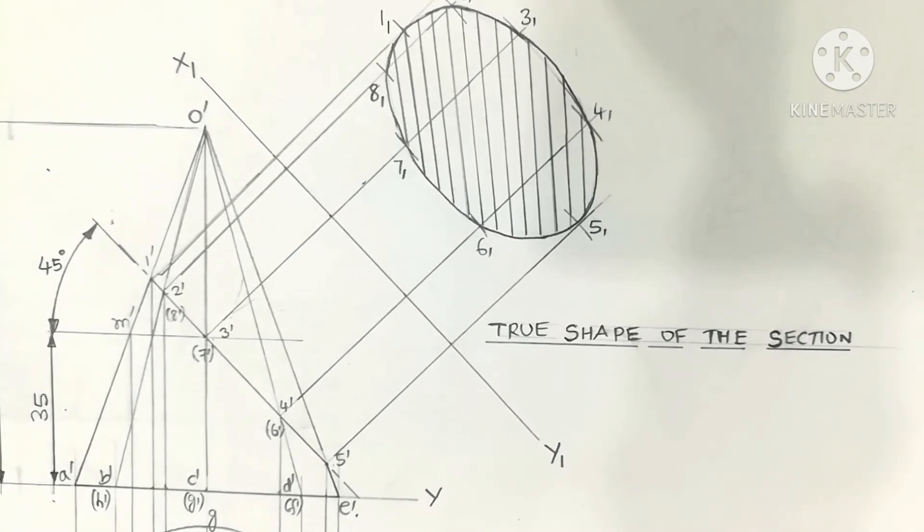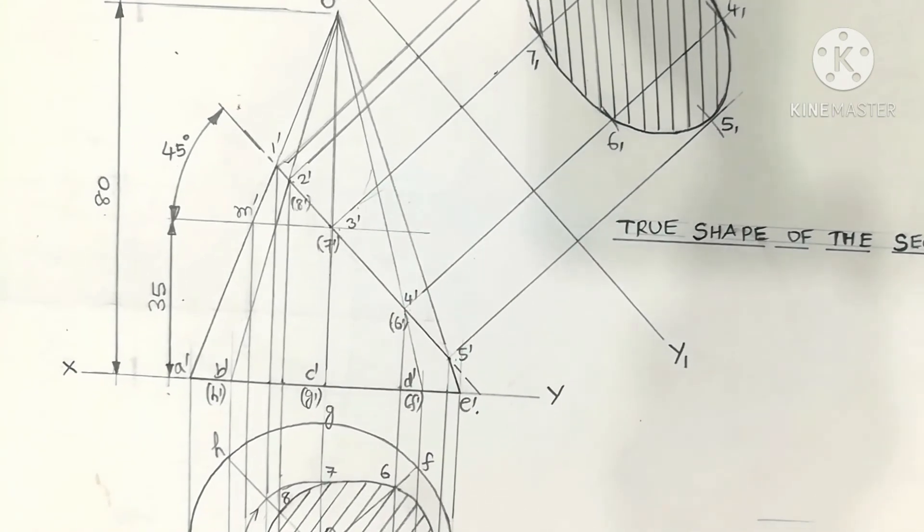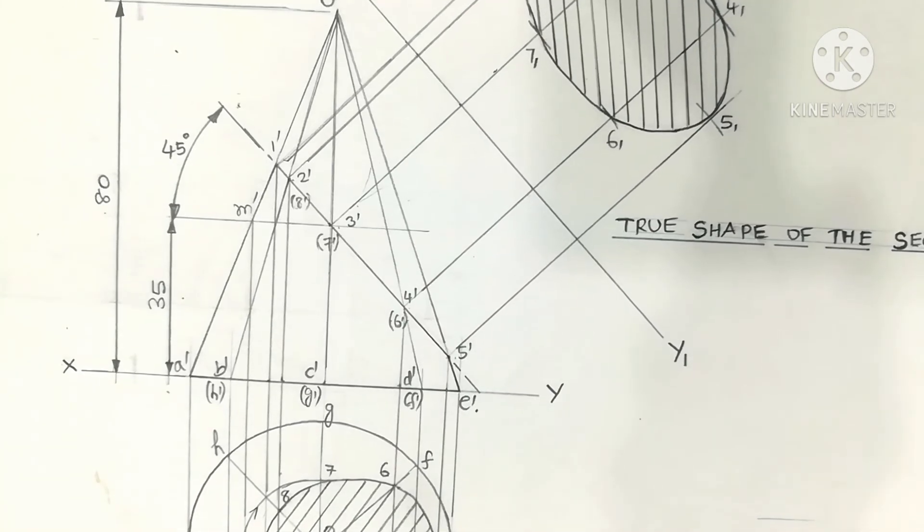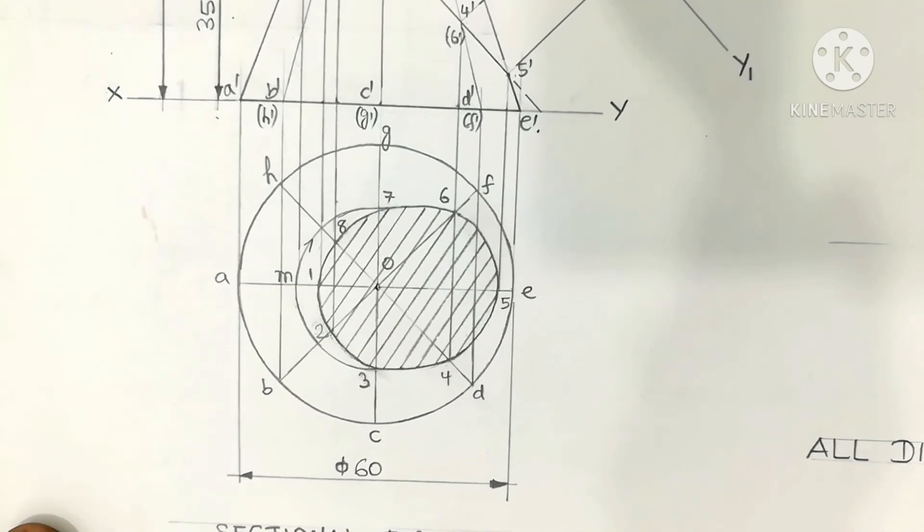The diagram appears like this on the sheet, and the procedure is explained in detail using a cone. A separate video is provided. The link is given in the description. Click the link for a detailed explanation of how to draw this diagram on the topic of section of solids.